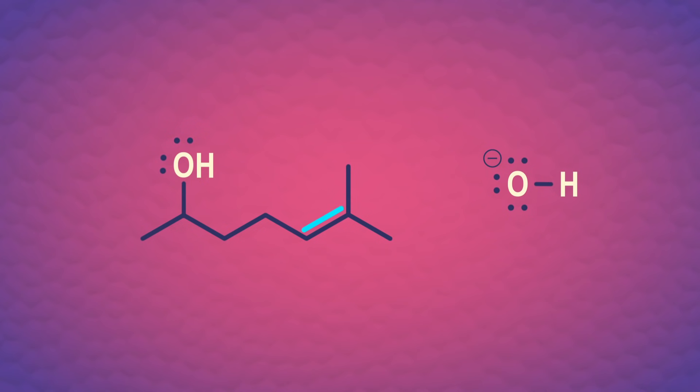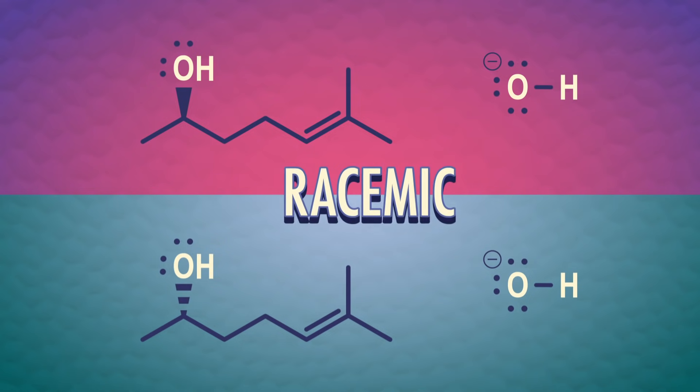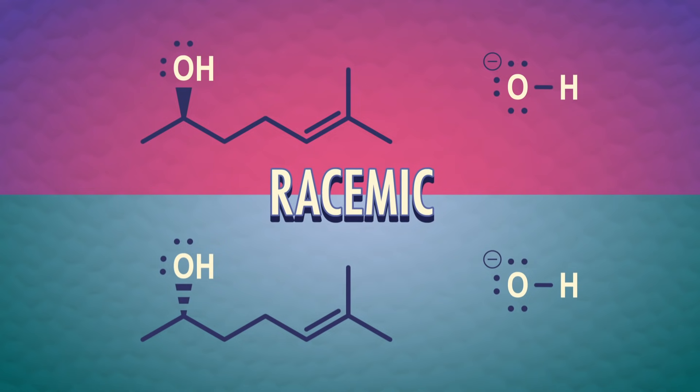Notice the double bond in the molecule doesn't react, and the hydride anion only attacks at the electropositive carbonyl carbon. And since aldehydes and ketones have trigonal planar molecular geometry, the hydride can attack one side or the other, and we get a racemic mixture at a chiral carbon.